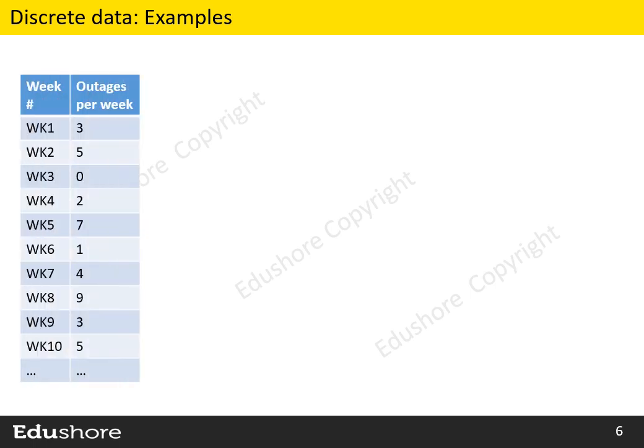Let's look at some examples of discrete data. Let's say we captured the number of network outages that happened per each week. Since this data consists of numbers that are counted, it is discrete.